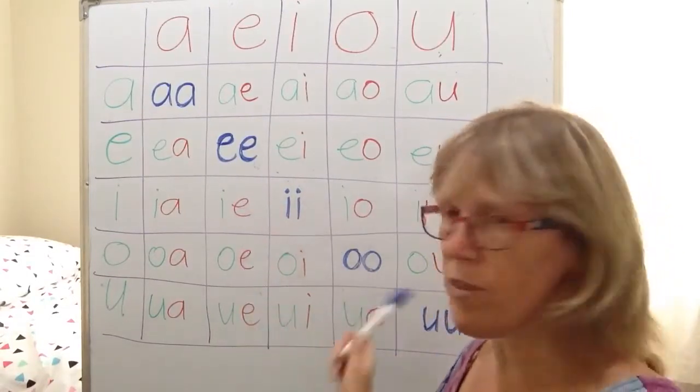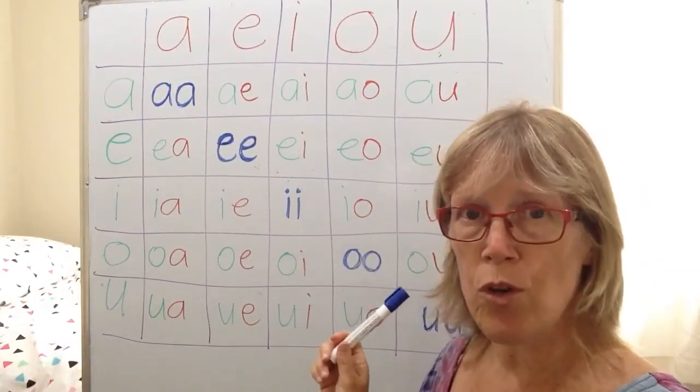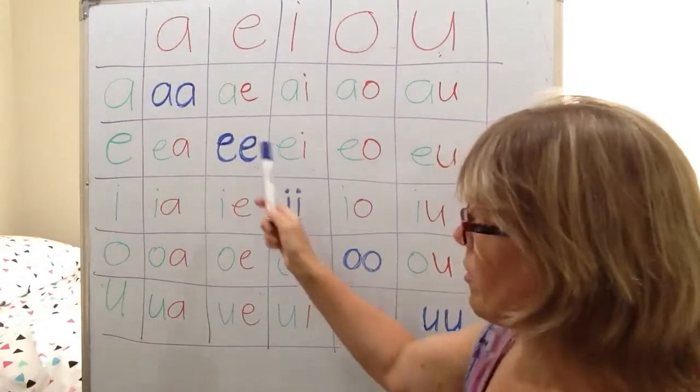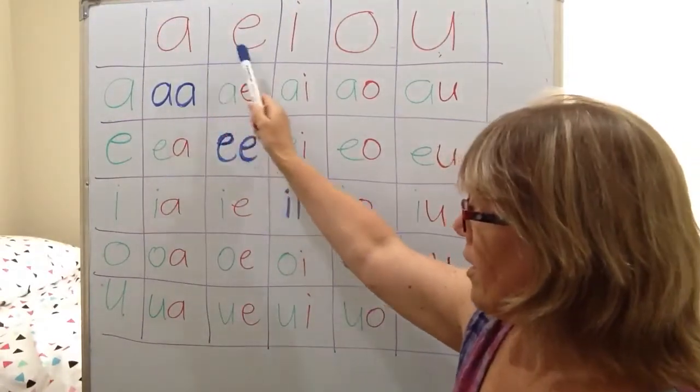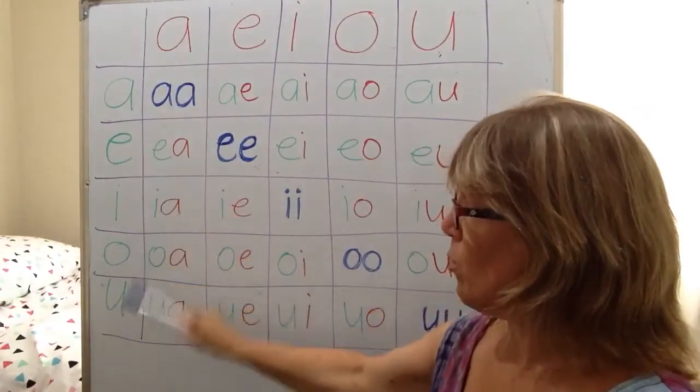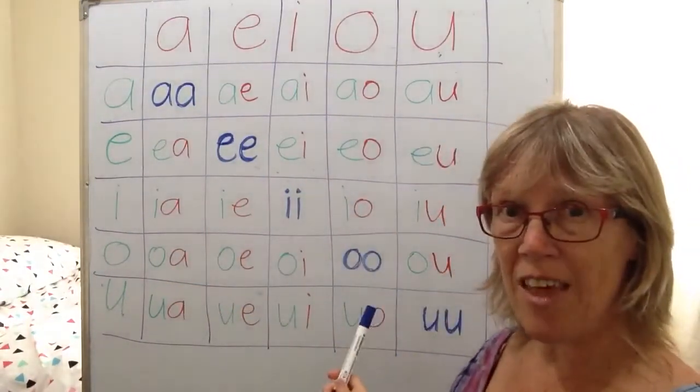What I've done here is I've made this into a song so you can see all the combinations of the vowels together, and this is all of them because we've got A, E, I, O, U. A, E, I, O, U. So these are all the combinations that they could be.